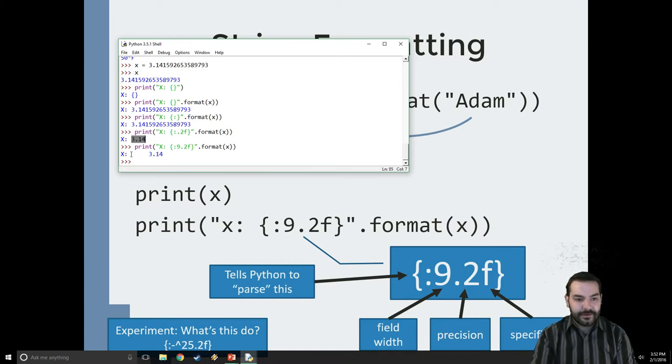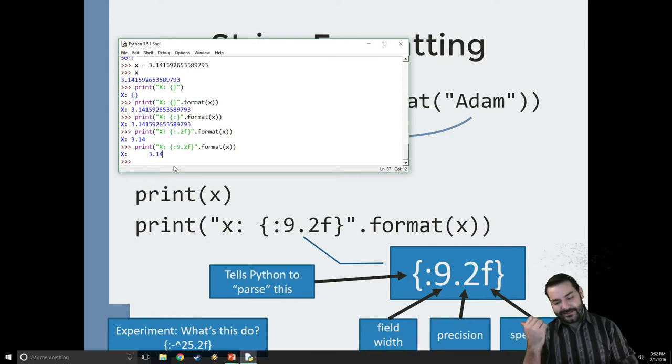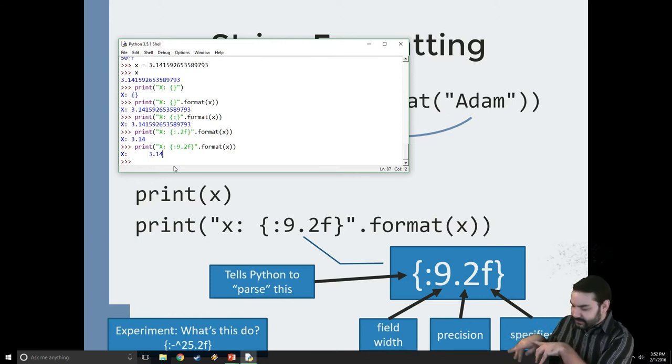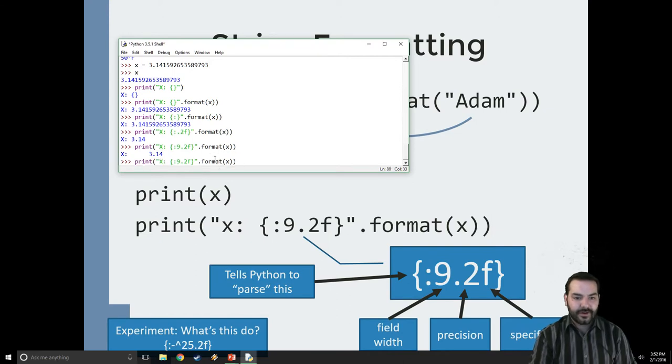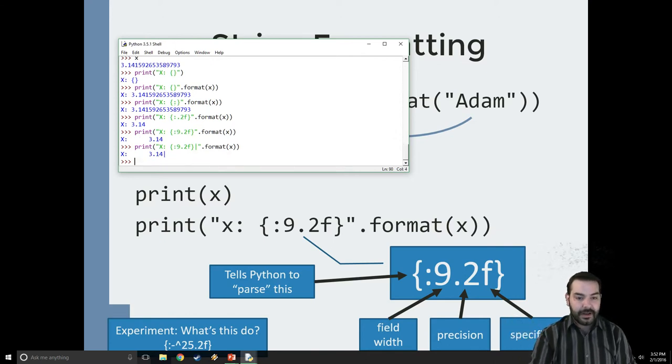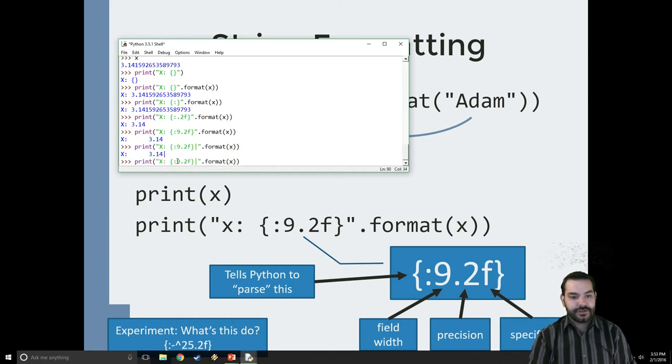So what about that little caret right over there, that little experiment 'what does that do?' Well, let's start off with: I'm going to put a little pipe here, just a pipe to indicate the end of my string. Okay, fair enough. Well, I'll come in, change this to a 25 - we already know that that just means I'm going to get more spacing, which I do.